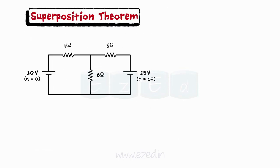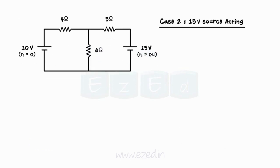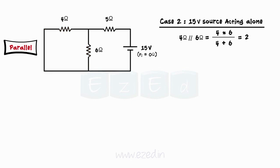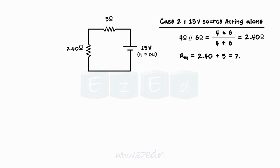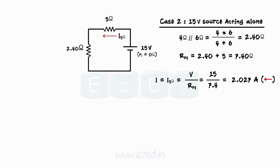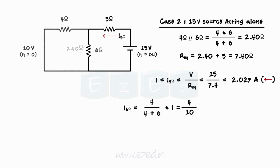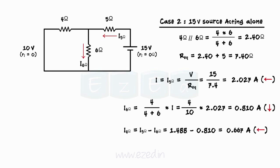Now consider the second case: the 15V source acting alone and the 10V source replaced by a short circuit wire. Here we get the 4 Ohms and 6 Ohms resistors in parallel, with their parallel equivalent in series with the 5 Ohms resistance. Total current I becomes 15 upon 7.4 equals 2.02 Amperes. Current through 6 Ohms becomes 0.8108 Amperes and current through 4 Ohms becomes 0.667 Amperes.